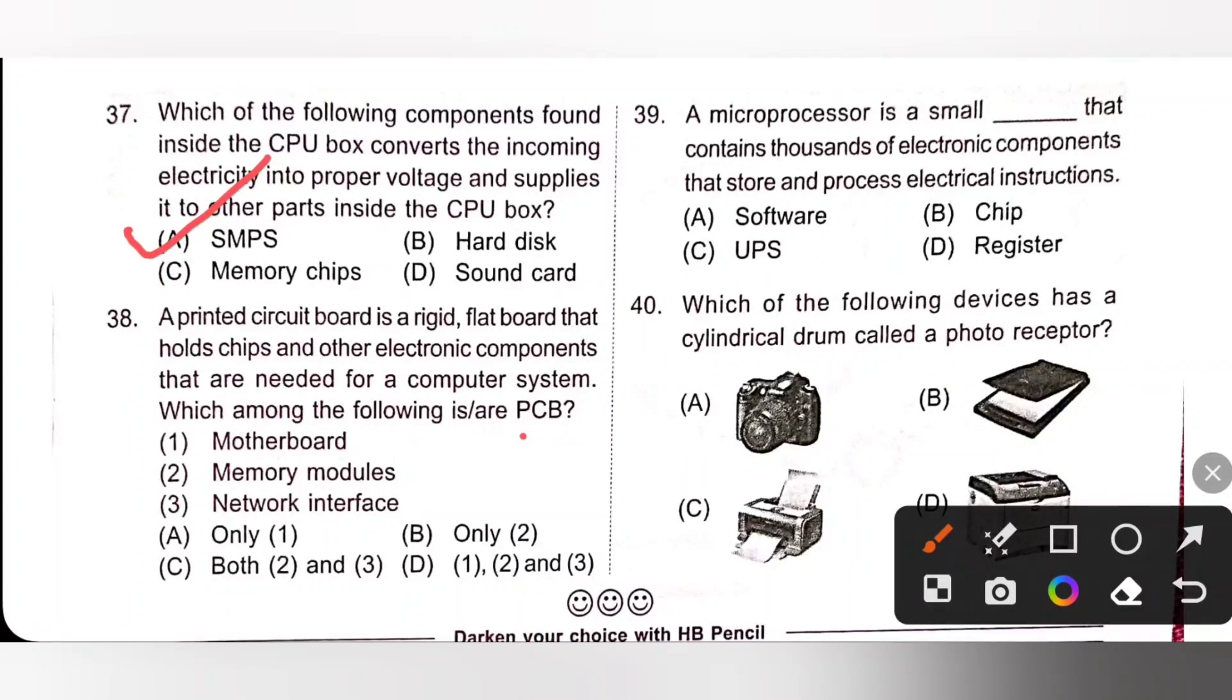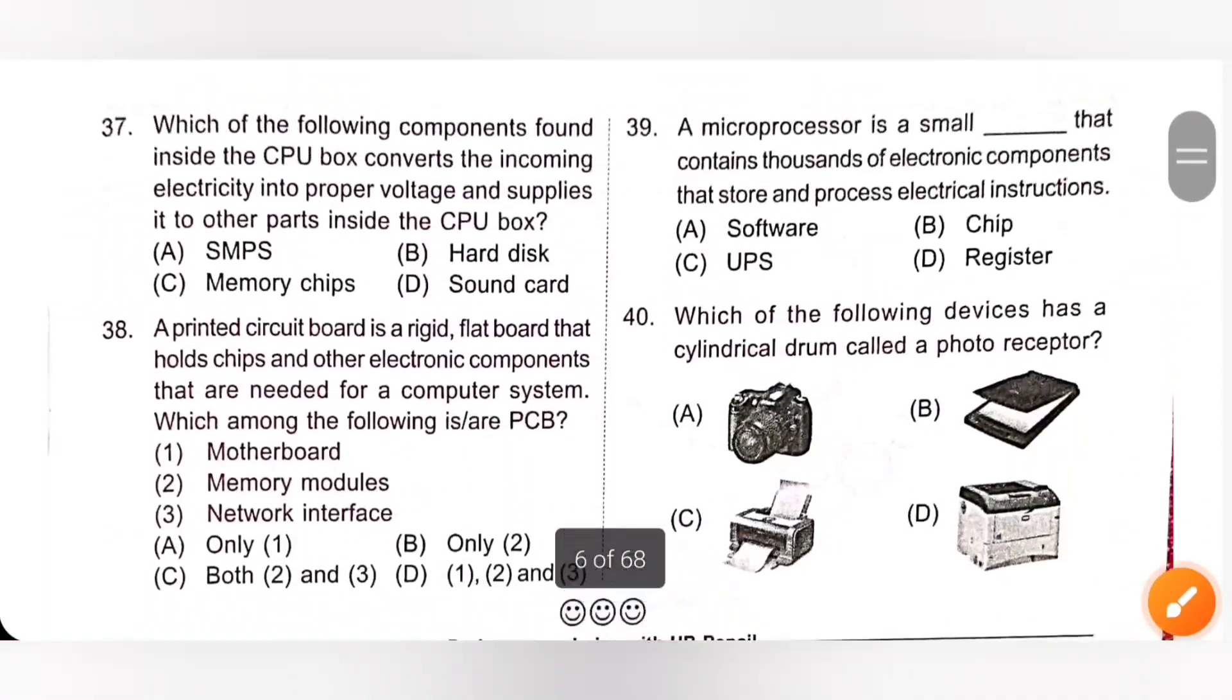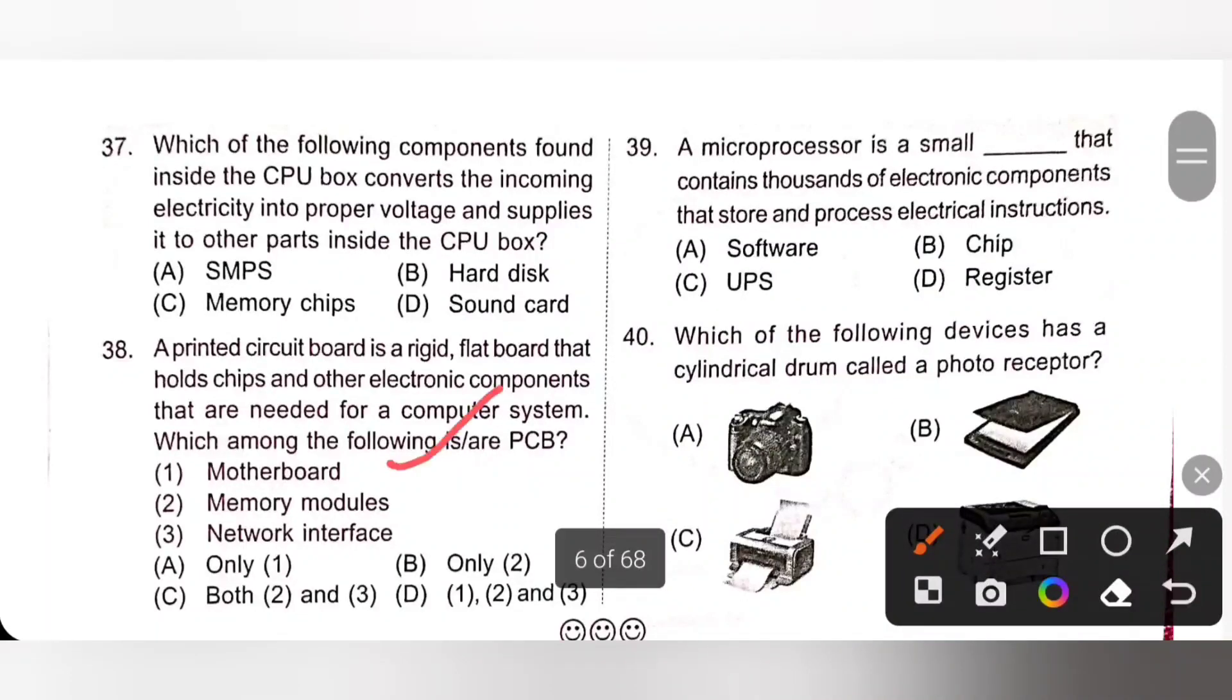Question 38. A printed circuit board is a rigid flat board that holds chip and other electronic components that are needed for a computer system. Which among the following are PCB? PCB means printed circuit board. 1. Motherboard - it is a PCB. 2. Memory modules - it is also PCB. 3. Network interface - it is also printed circuit board. So 1, 2 and 3, all are PCB. Option D is the correct answer.